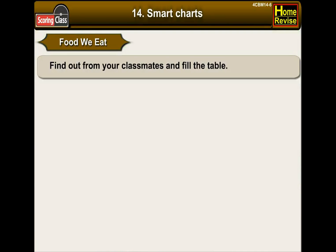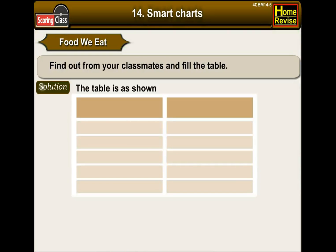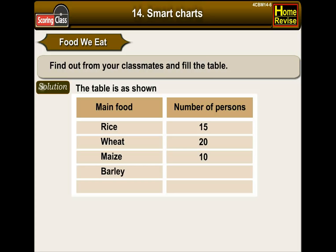Find out from your classmates and fill in the table. The table shows: Main food and number of persons. Rice is eaten by 15 people, wheat by 20, maize by 10, barley by 5, and ragi by 5.